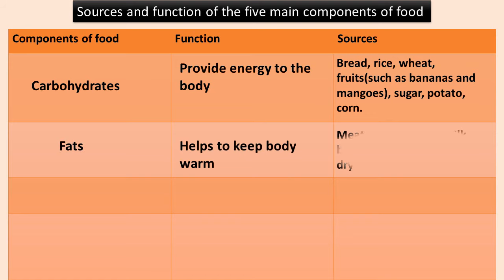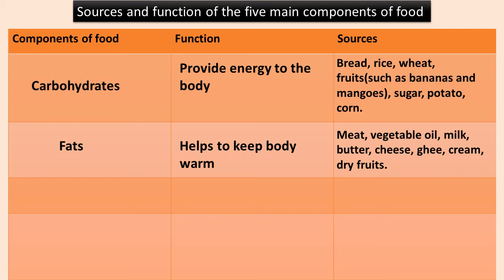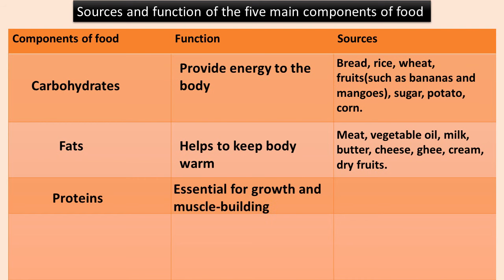Fats help to keep the body warm. Sources of fats are meat, vegetable oil, milk, butter, cheese, ghee, cream, and dry fruits. Proteins are essential for growth and muscle building. Sources of proteins are chicken, fish, eggs, milk, cheese, pulses, and soya bean.